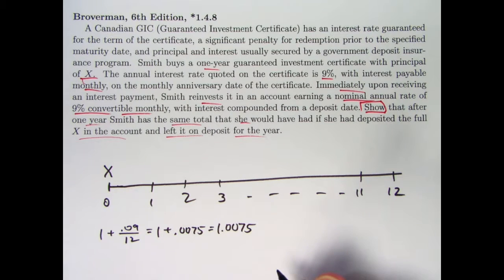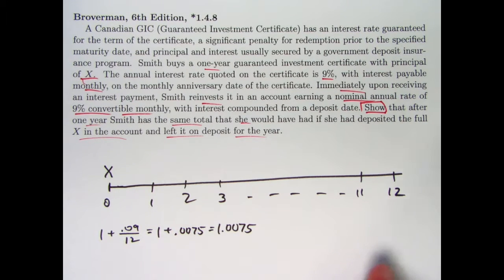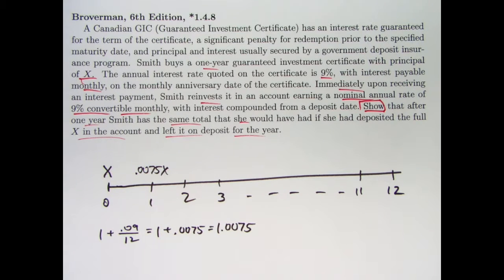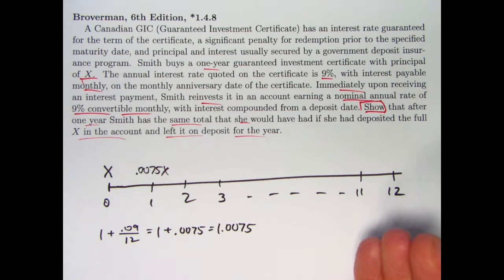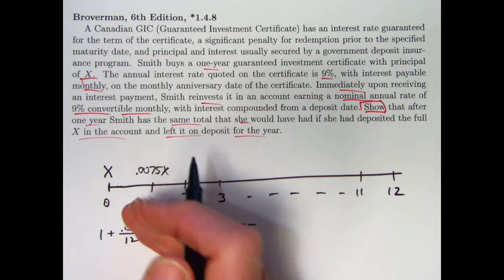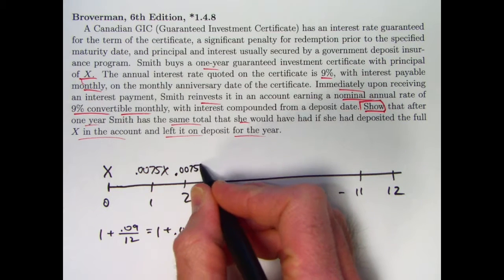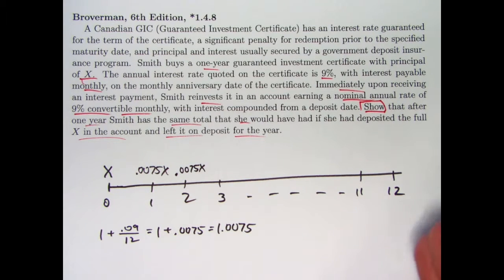However, the interest part of that, 0.0075X, is now going to be taken out, ignoring the penalty I guess, and reinvested in another account that earns the same interest rate. Let me go ahead and write 0.0075X here. That's going to be in this other account now earning interest for 11 months until time 12. The original X is now still in the original account, back to where it started. It earns interest for another month, from time 1 to time 2. It's going to earn the same amount of interest, 0.0075X. Once again, at time 2, you take that interest out and put it in some other account. Some different account that still earns 9% interest compounded monthly, and that's going to earn interest for 10 months.